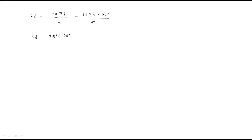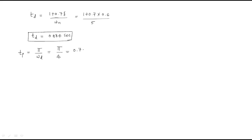The next parameter is the peak time. The formula for peak time is: tp = π / ωd. Substituting ωd = 4 rad/s: tp = π / 4 = 0.785 seconds. So the peak time is 0.785 seconds.